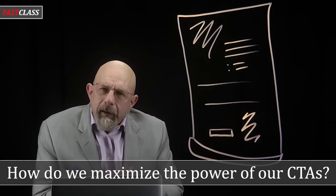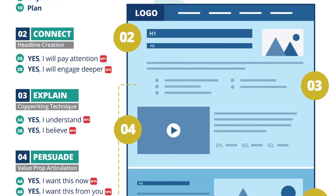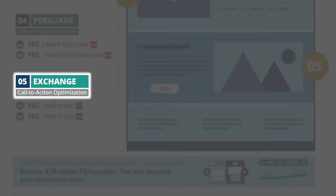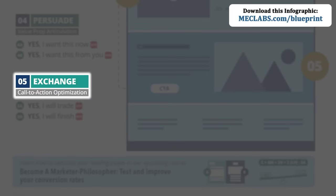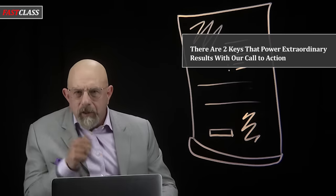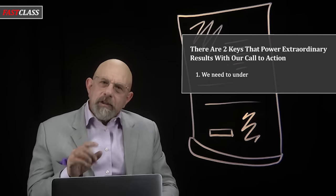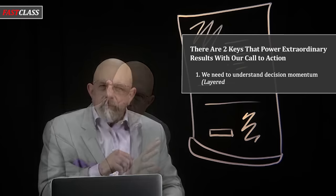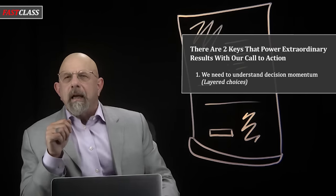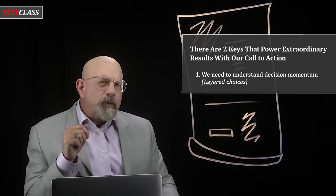So that's the problem. What do we do? How do we develop CTAs that add to the purchase momentum, that drive maximum conversion? We're on section 5, the landing page blueprint. In this section we're going to discover the foundational understanding that powers extraordinary results with your CTA. There are two keys, and here's the first: we need to understand decision momentum.